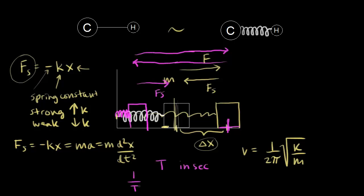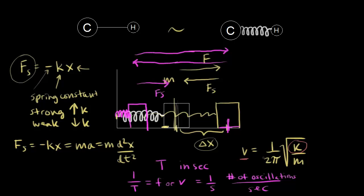One over the period equals the frequency, with units of one over seconds — the number of oscillations per second. The spring constant k affects the frequency: if you increase k, you increase the frequency, so a strong spring causes the mass to oscillate faster. What about mass? If you increase the mass, that decreases the frequency — you'd get fewer oscillations per second, a slower oscillation.